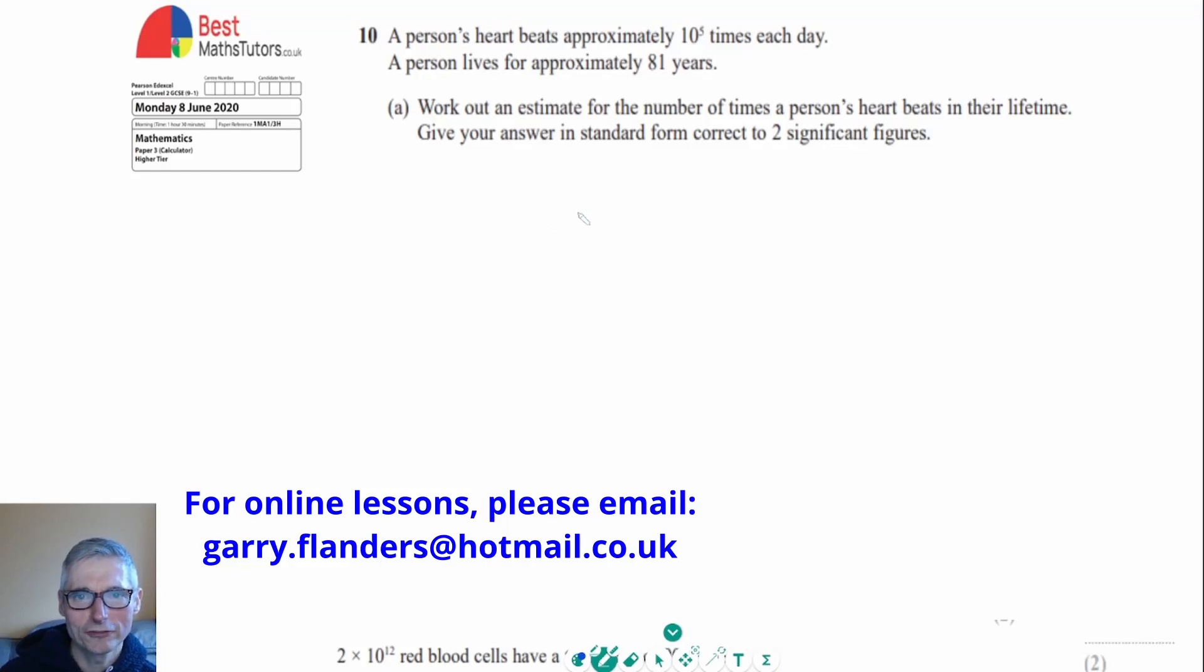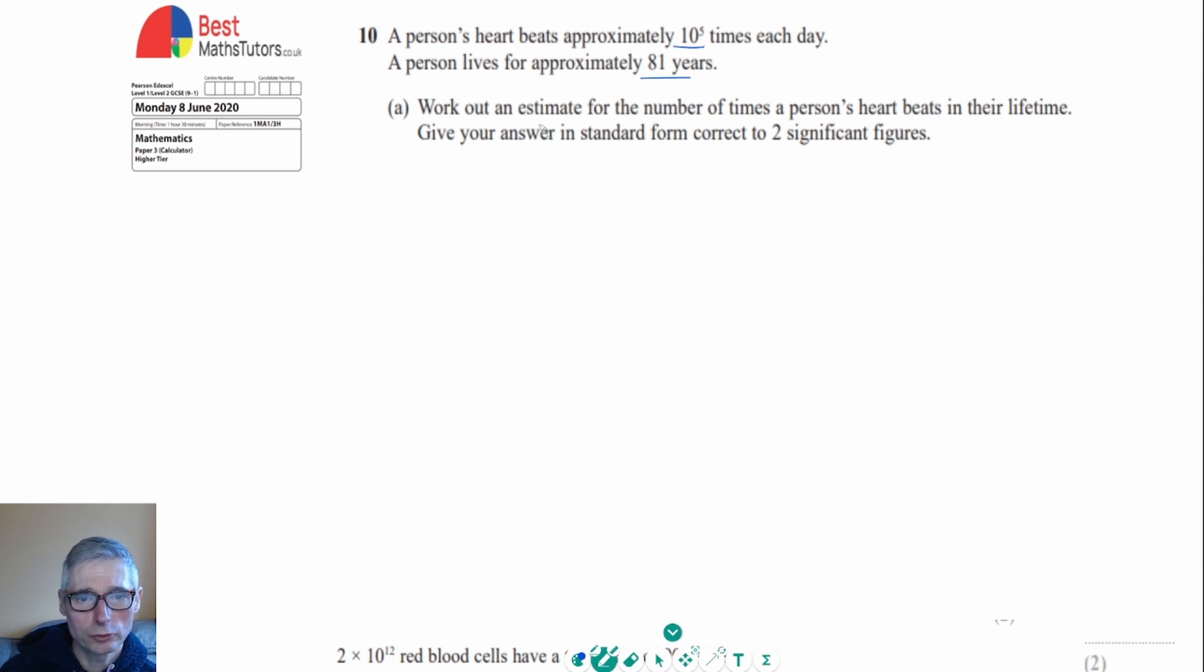This is question 10, a question involving standard form. It says that a person's heart beats approximately 10 to the 5 times each day and a person lives for 81 years. What we've got to do is work out the estimate for the number of times a person's heart beats in their lifetime, giving the answer correct to two significant figures.